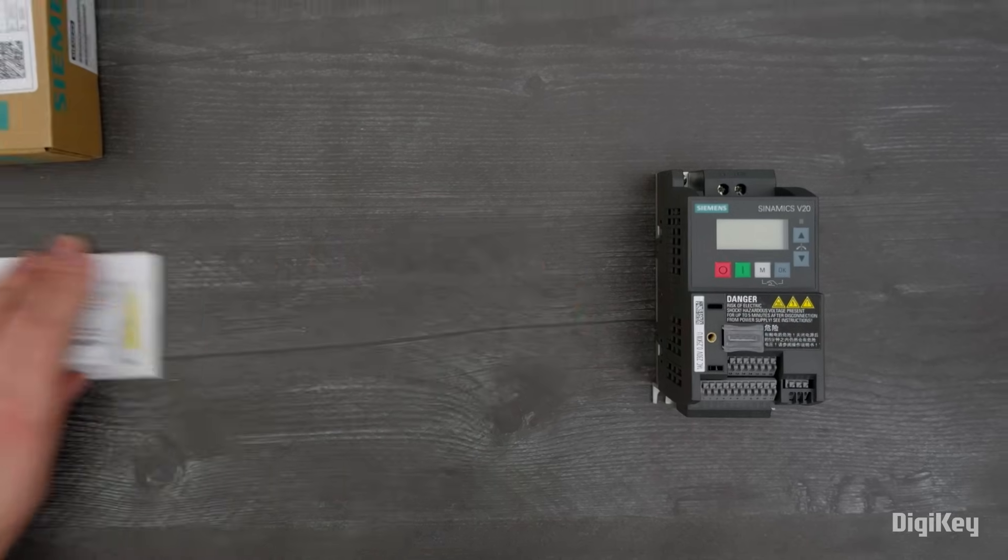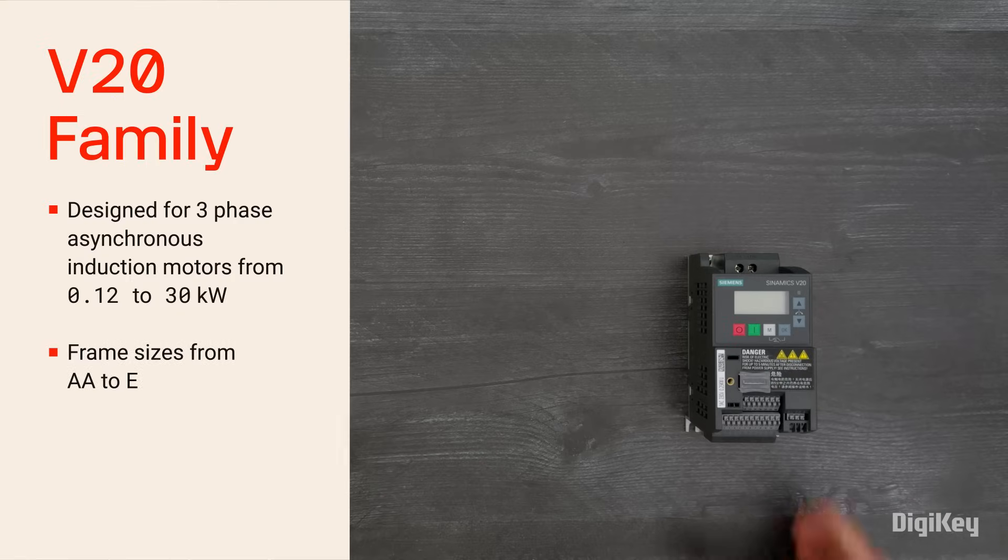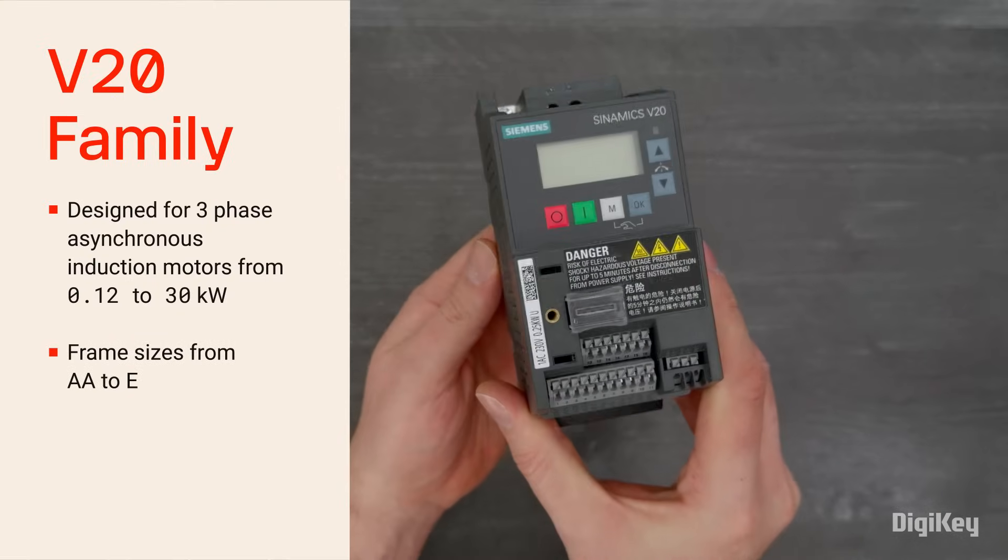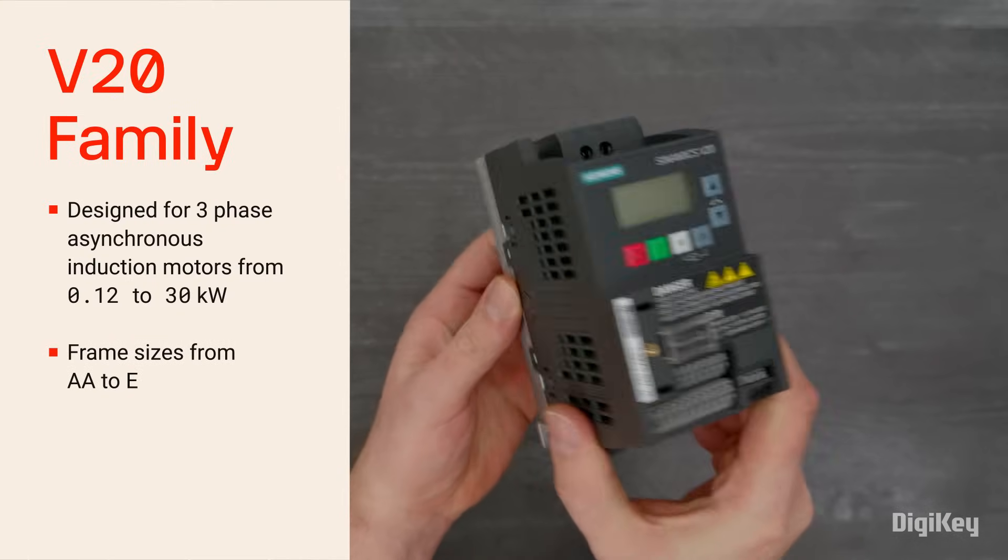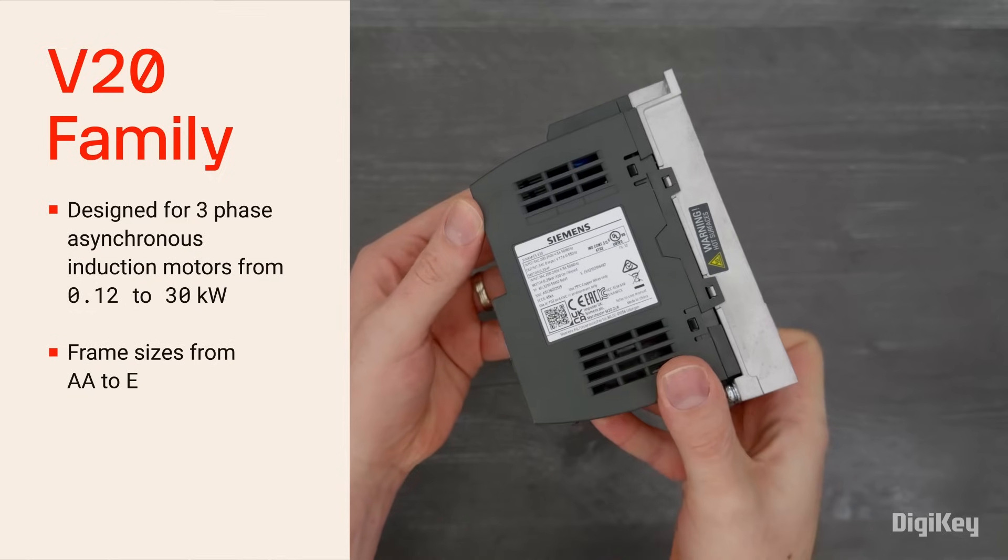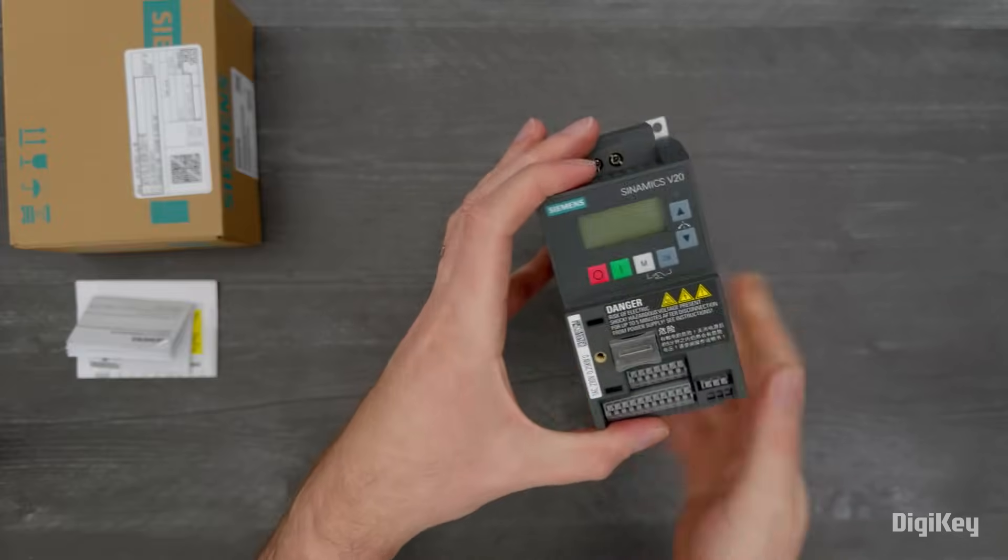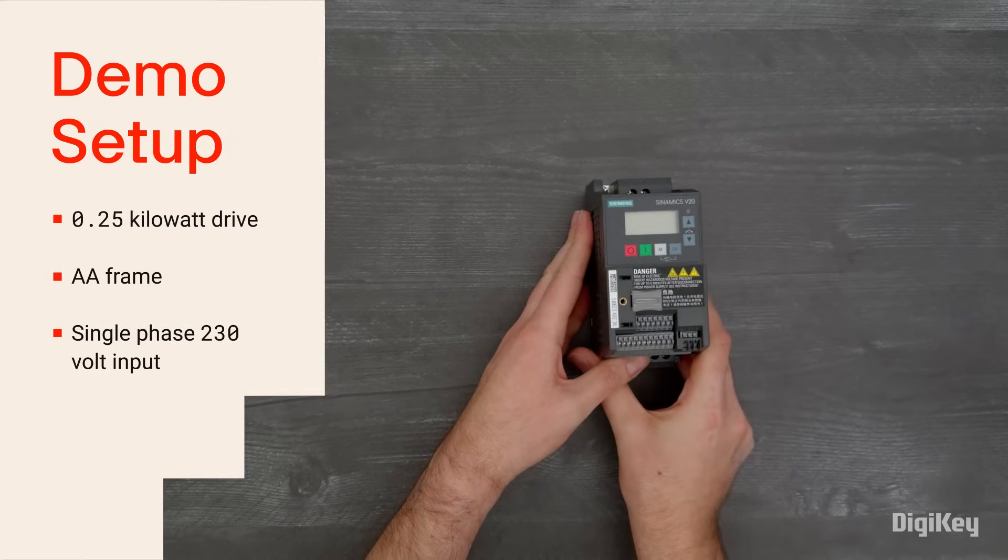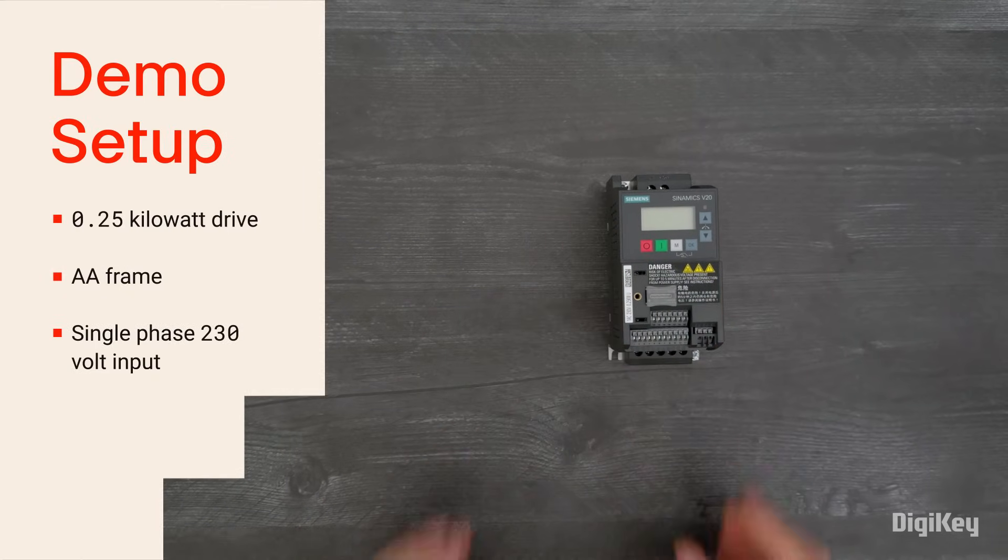The V20 family is designed for three-phase asynchronous induction motors from 0.12 to 30 kilowatts. That's up to 40 horsepower with 480 volt input in frame sizes from AA to E. In this case, we have the 0.25 kilowatt drive in a AA frame.